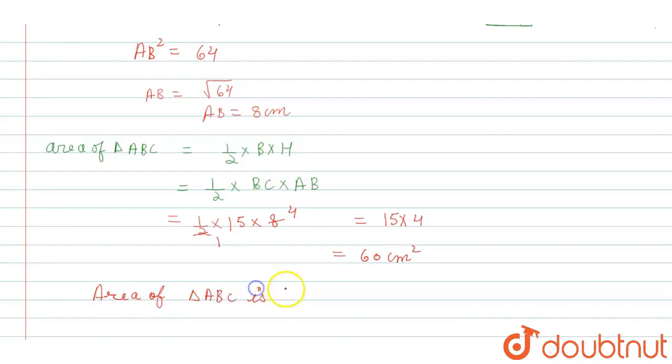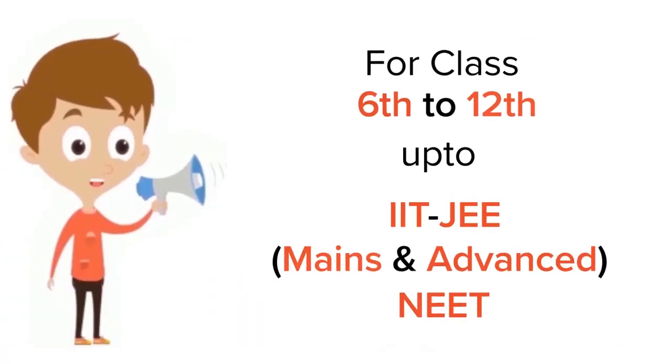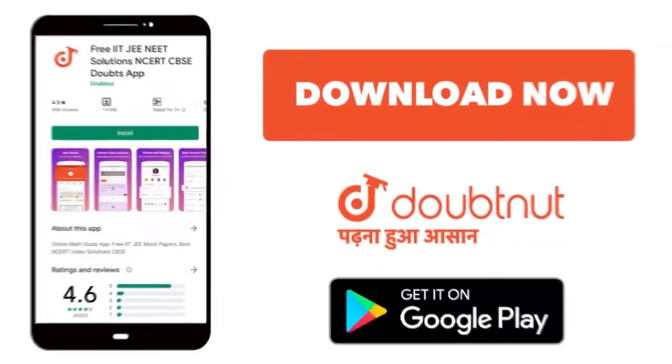So area of triangle ABC is 60 cm². This is the answer. For class 6 to 12, IIT-JEE and NEET level, trusted by more than 5 crore students. Download Doubtnet today.